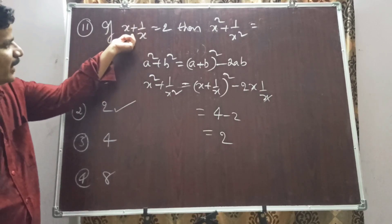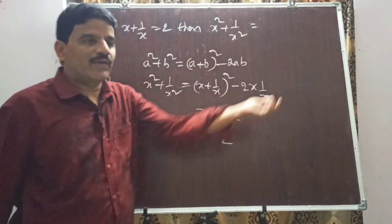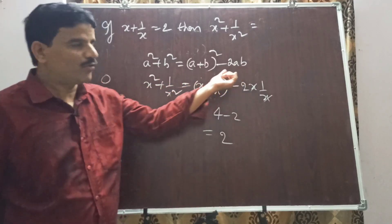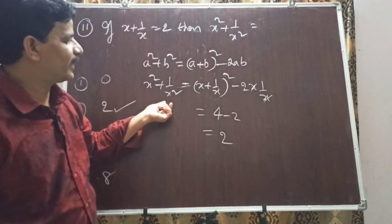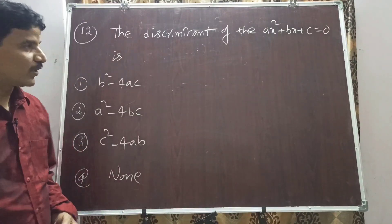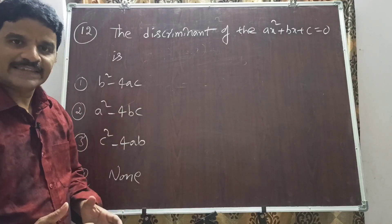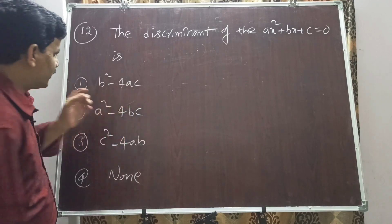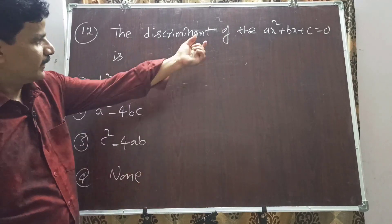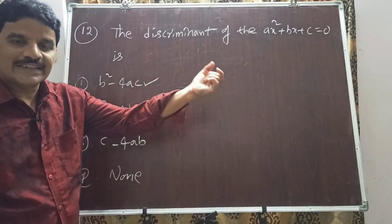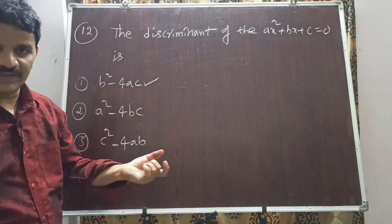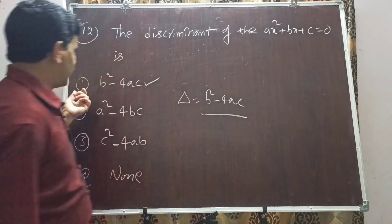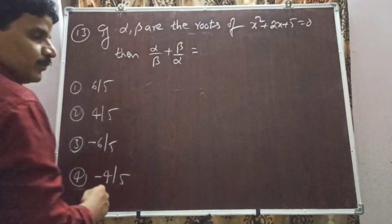Substituting a = x and b = 1/x: a² + b² = (a+b)² - 2ab = (x + 1/x)² - 2·x·(1/x) = 2² - 2 = 2. Question 12: The discriminant of ax² + bx + c = 0 is option A: b² - 4ac, which is the right answer. The discriminant is denoted by delta (Δ) = b² - 4ac. Option 1 is correct.